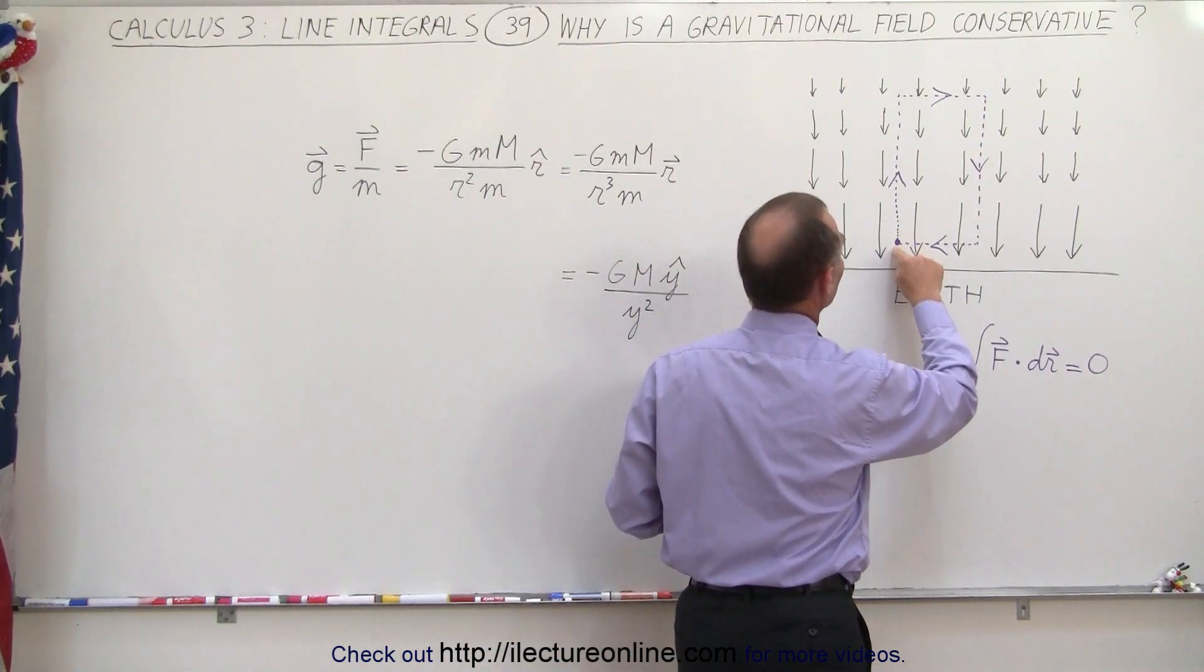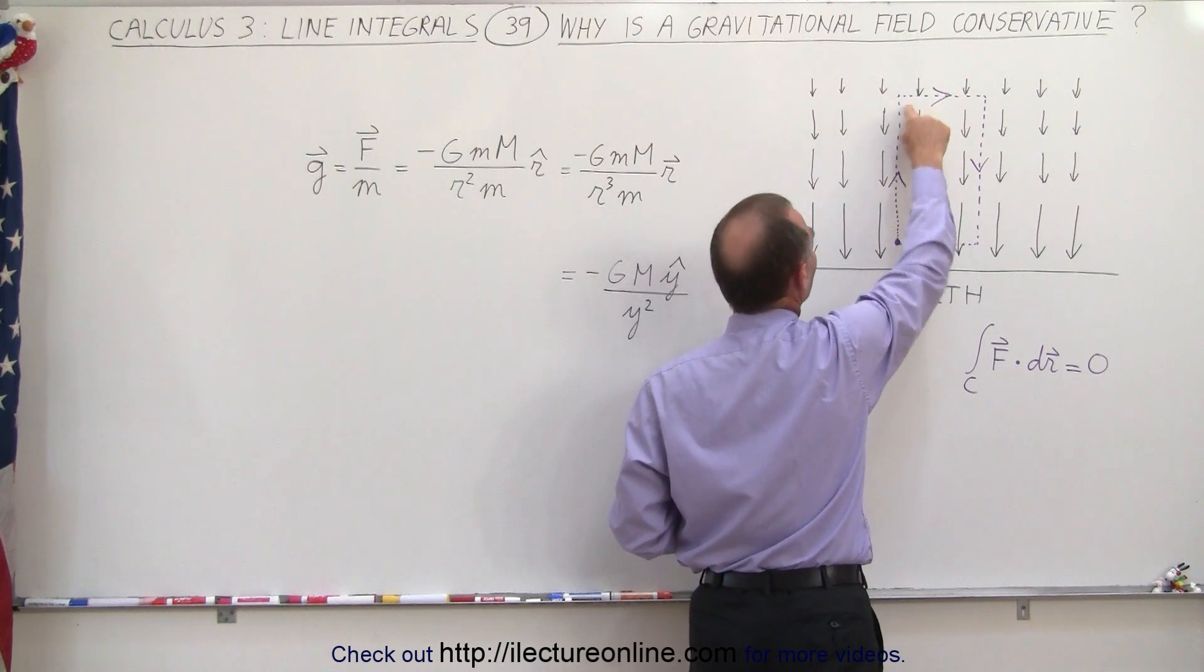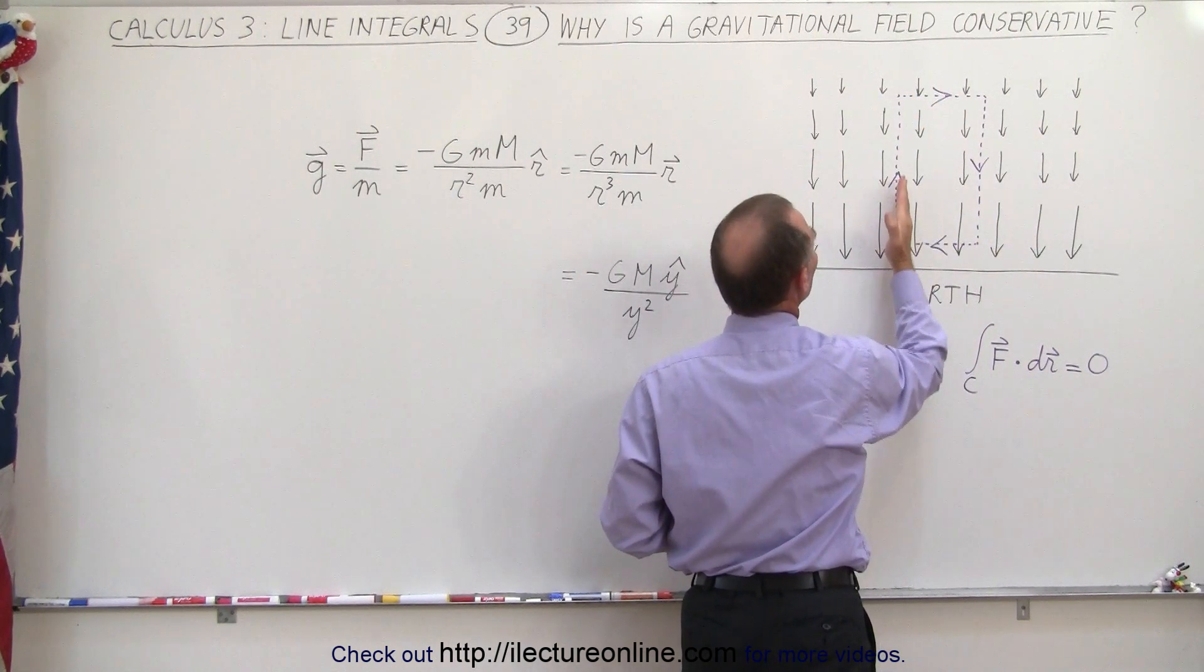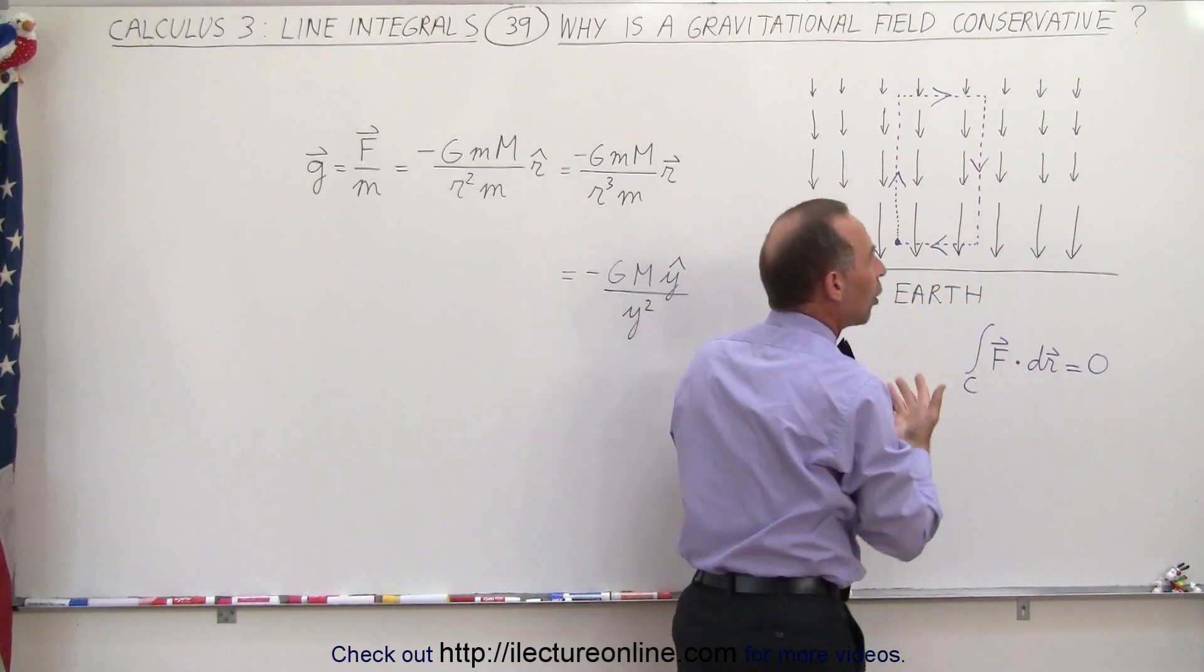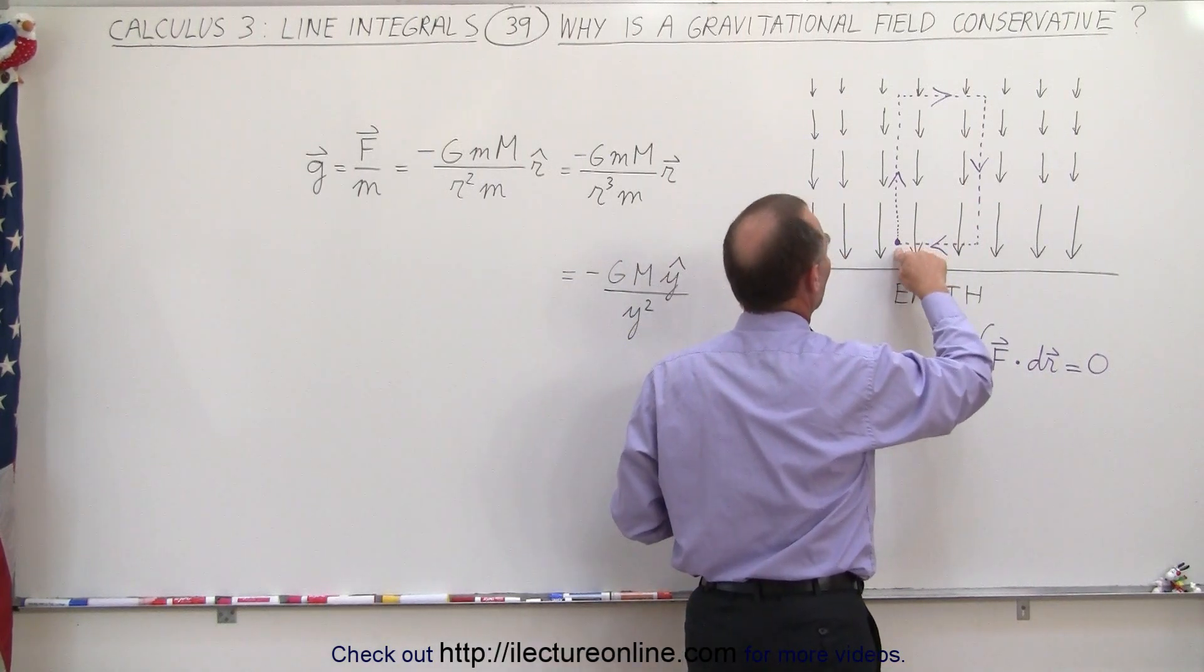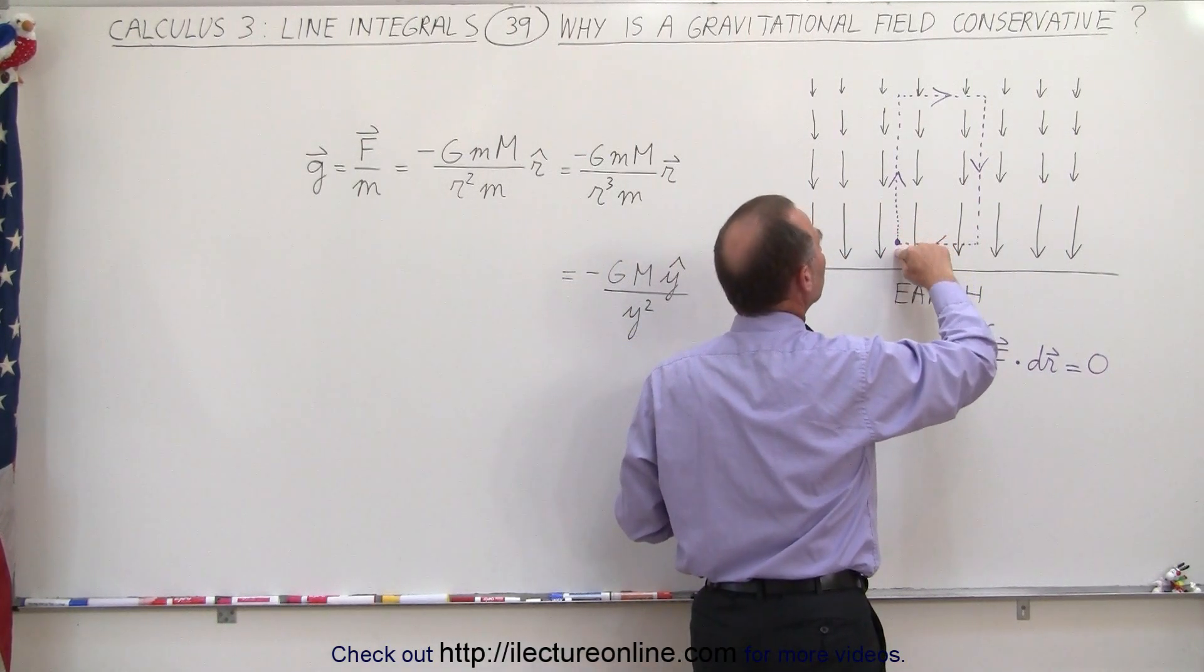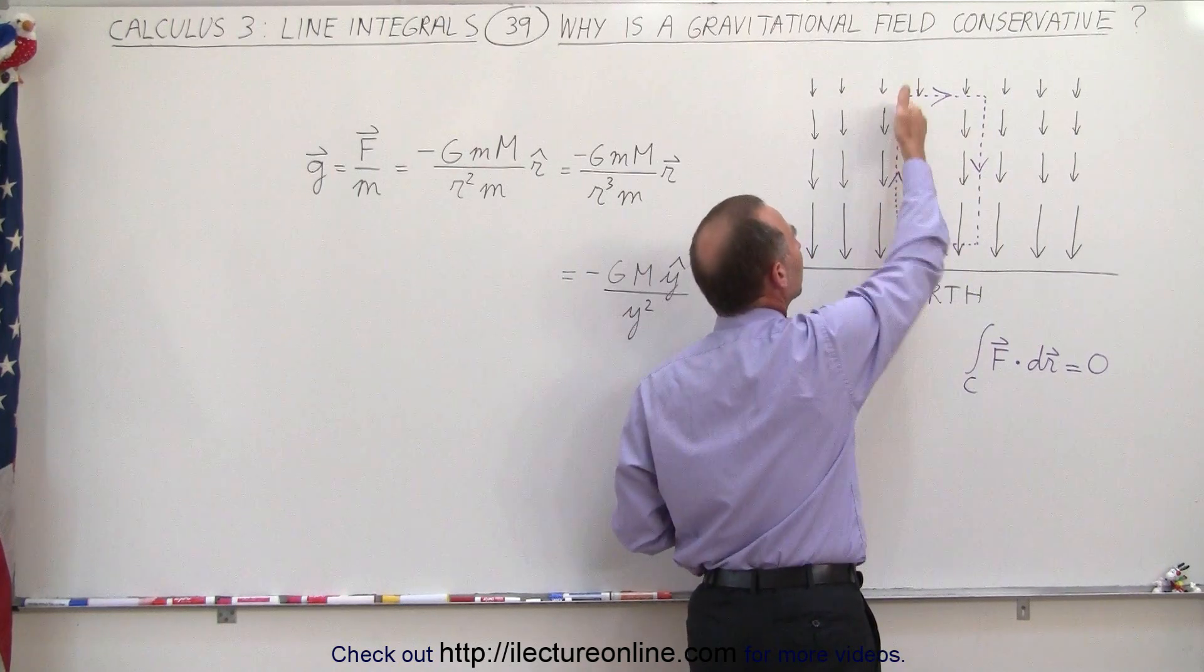Notice that traveling from this corner, our starting point, to the very top here where we're going to turn to the right, we're moving against the field. The field is directed downward; we're moving upward, so this is a negative contribution. We lose potential energy as we go up, so there's a negative contribution to the line integral here.